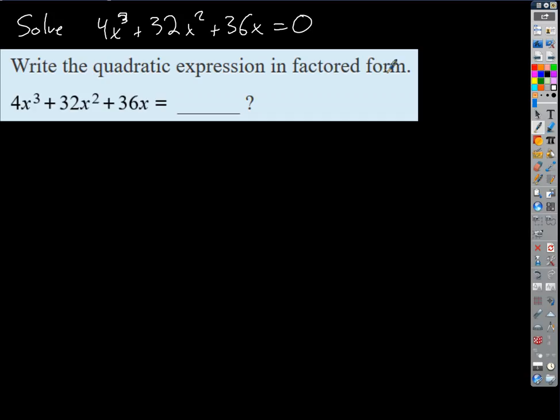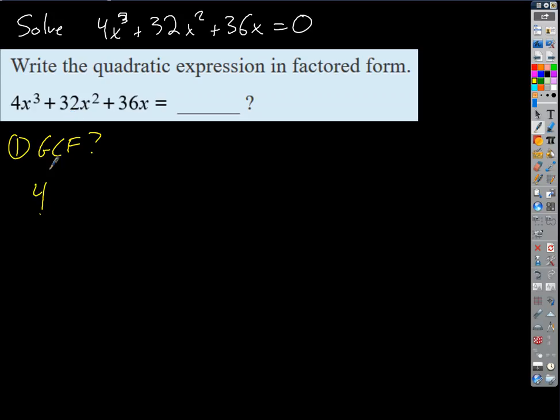So let's talk about the steps we go through to factor. The first thing we always want to do when we're trying to factor something is see if we can pull out a greatest common factor — see if there's something we can undistribute from all the terms. That's always going to help; it's always going to make things easier. So is there one? Yes. The number part is 4. The greatest common factor of 4, 32, and 36 is just 4 — that's the biggest number that divides evenly into all of those. So we can undistribute a 4 from everything.